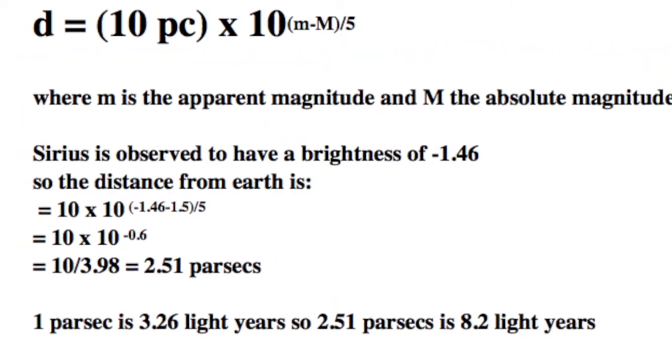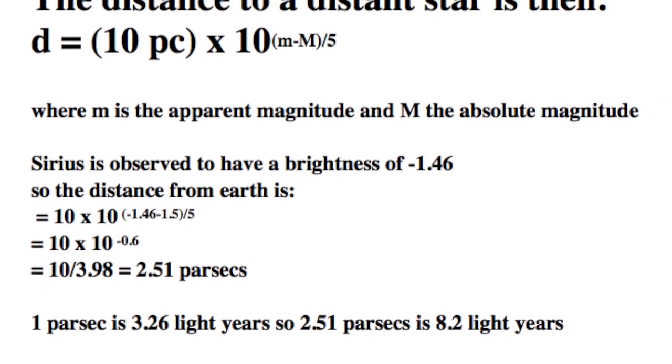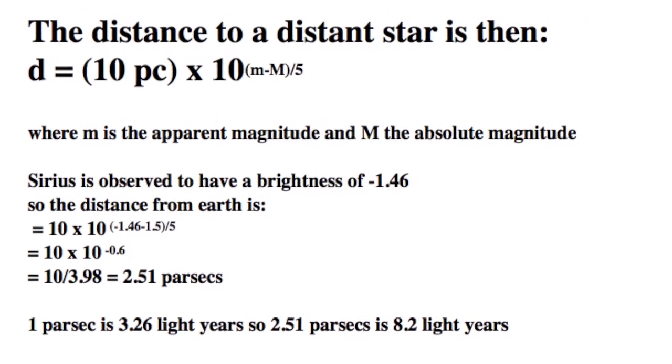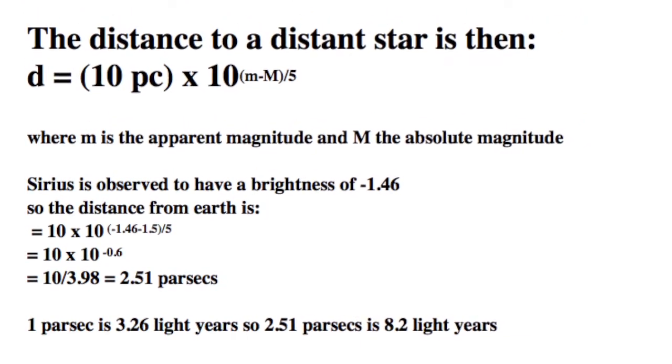Now, a parsec is 3.26 light-years, so 2.51 parsecs is 8.2 light-years. Not exactly equal to the accepted value, but I have rounded some of the numbers I've used.